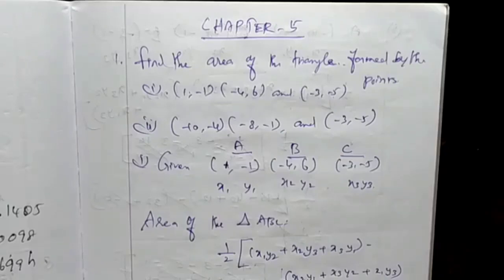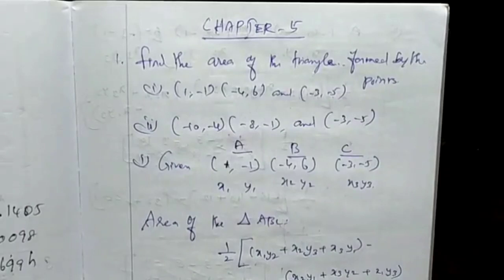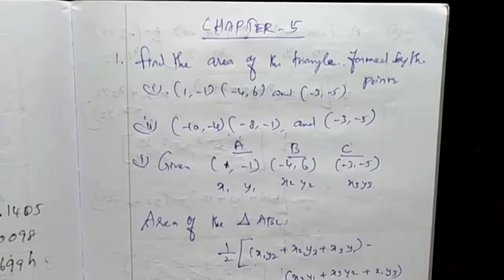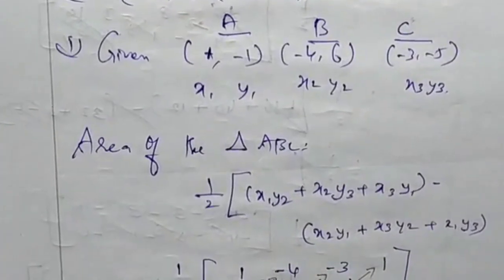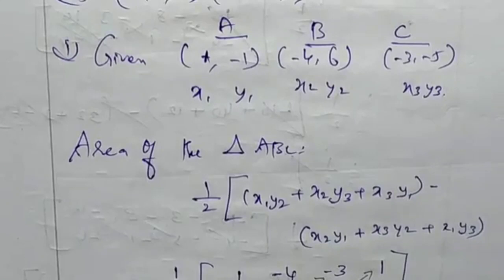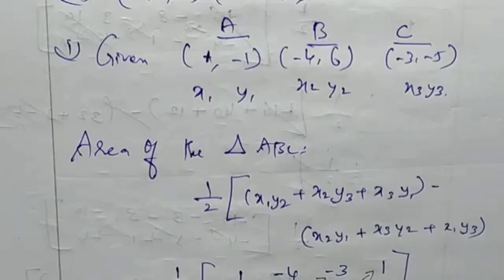Area of triangle equals one-half times the absolute value of: x1 y2 plus x2 y3 plus x3 y1 minus x2 y1 plus x3 y2 plus x1 y3. This is the formula.